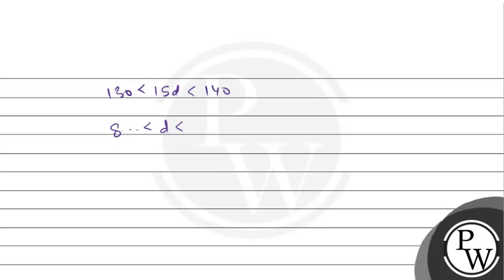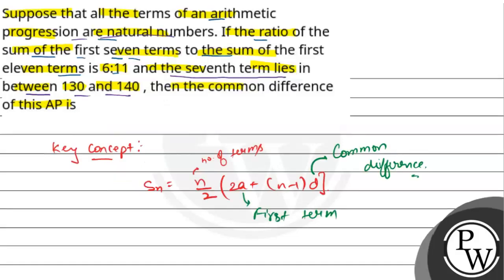अब d की value निकालें: 15d is between 130 and 140, यानी d ≈ 9 point something. चूँकि d natural number होना चाहिए, इसलिए d = 9. So the common difference of this AP is 9. I hope you understand well. Best of luck.